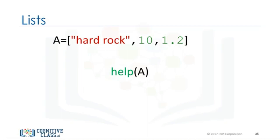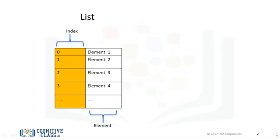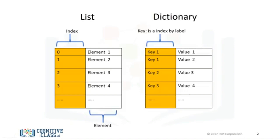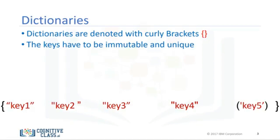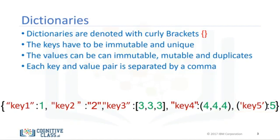Let's cover dictionaries in Python. Dictionaries are a type of collection in Python. A list has integer indexes — these are like addresses. A list also has elements. A dictionary has keys and values. The key is analogous to the index. They are like addresses, but they don't have to be integers — they are usually characters. The values are similar to the element in a list and contain information. To create a dictionary, we use curly brackets. The keys are the first elements. They must be immutable and unique. Each key is followed by a value separated by a colon. The values can be immutable, mutable, and duplicates. Each key and value pair is separated by a comma.